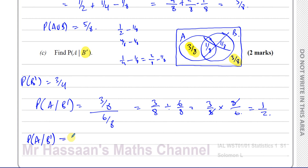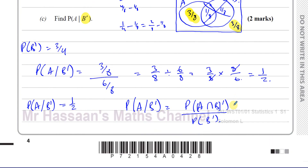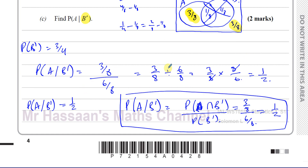You can also do this purely algebraically: the probability of A given B complement equals the probability of A intersection B complement, over the probability of B complement. A intersection B complement is 3/8 and the probability of B complement is 6/8, giving the same answer of 1/2. That's using the formula, whereas the previous approach used the Venn diagram, which I much prefer.